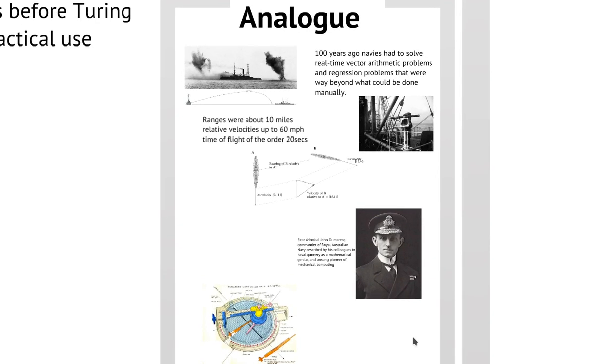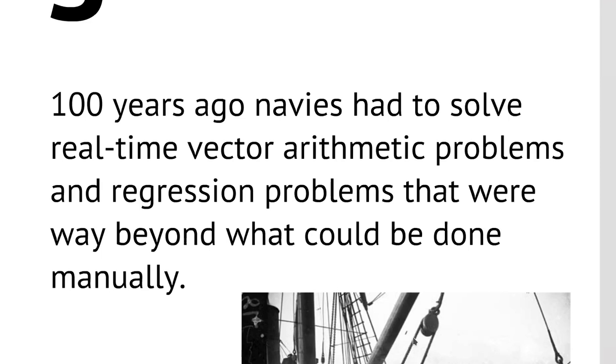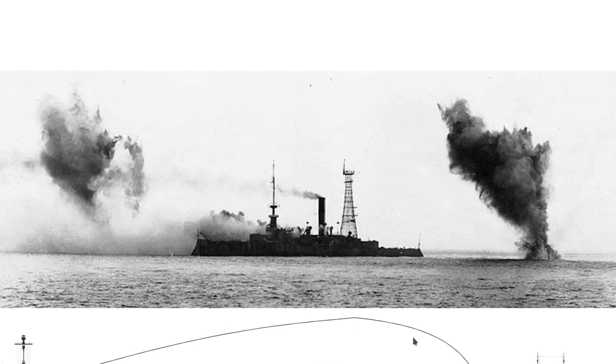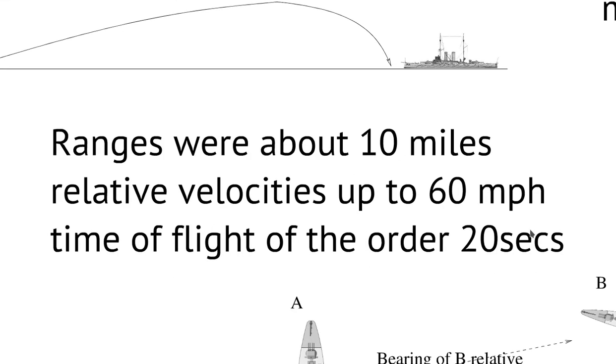Now, before Turing, let's take an example. A hundred years ago, navies had to solve real-time vector arithmetic problems and regression problems that were way beyond what could be done with pencil and paper. Basically, they were trying to work out fire control gunnery problems. They had ships firing at other distant ships, maybe 10 kilometers away, and both ships were moving and they had to try and hit the moving ship. Ranges were 10 kilometers, 10 miles, relative velocities about 60 miles per hour, time of flight of the order of 20 seconds.